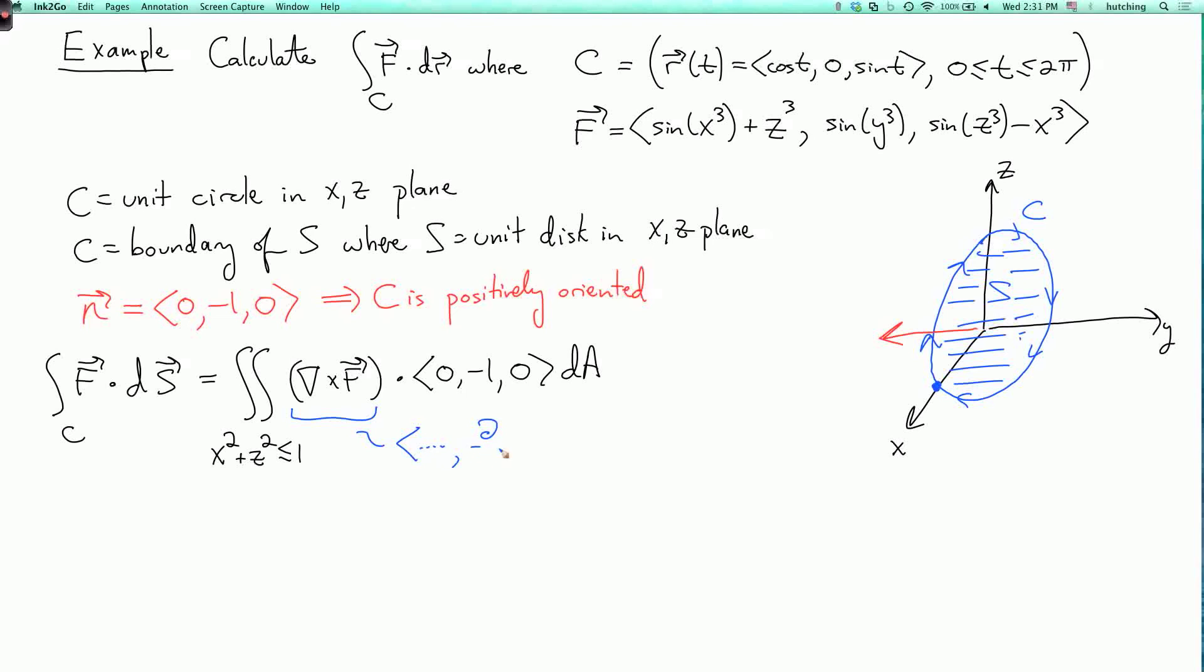So it's d/dz of sin(x³ + z³) minus d/dx of sin(z³ - x³). And then there's a third component, which I also don't care about.